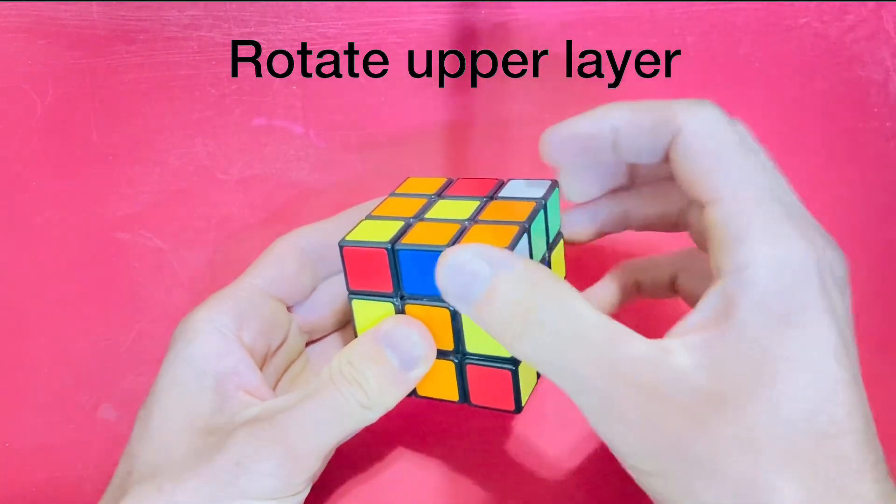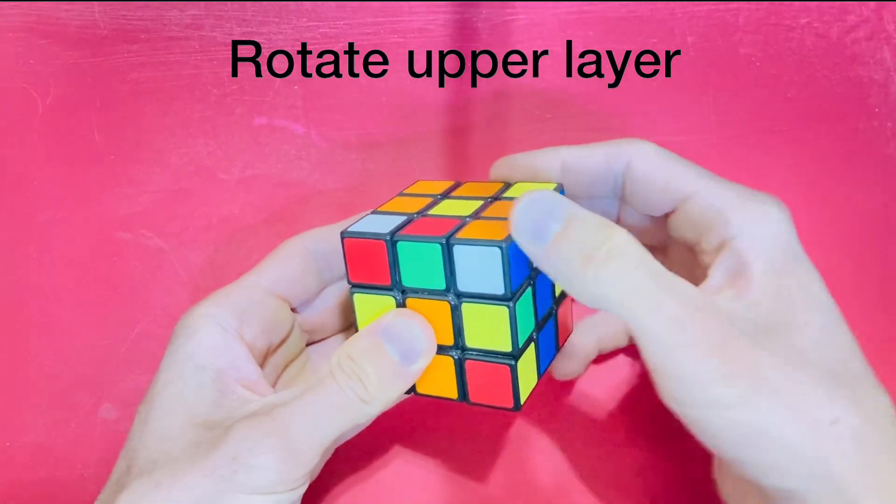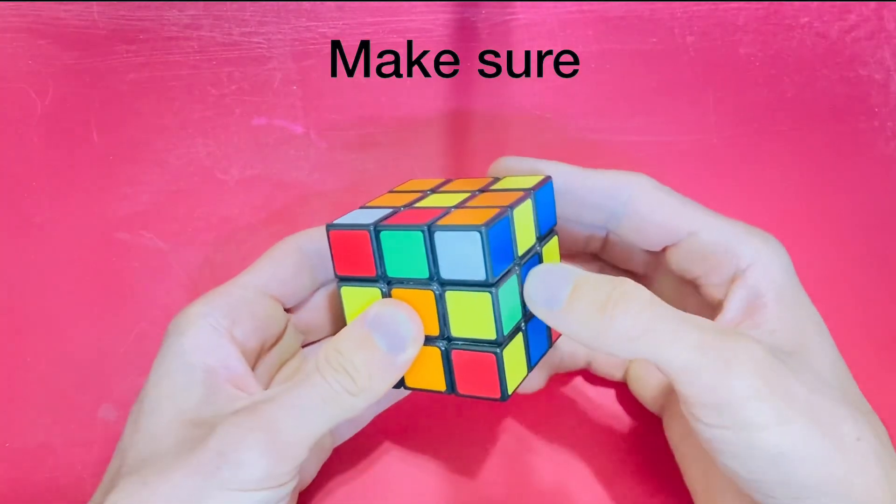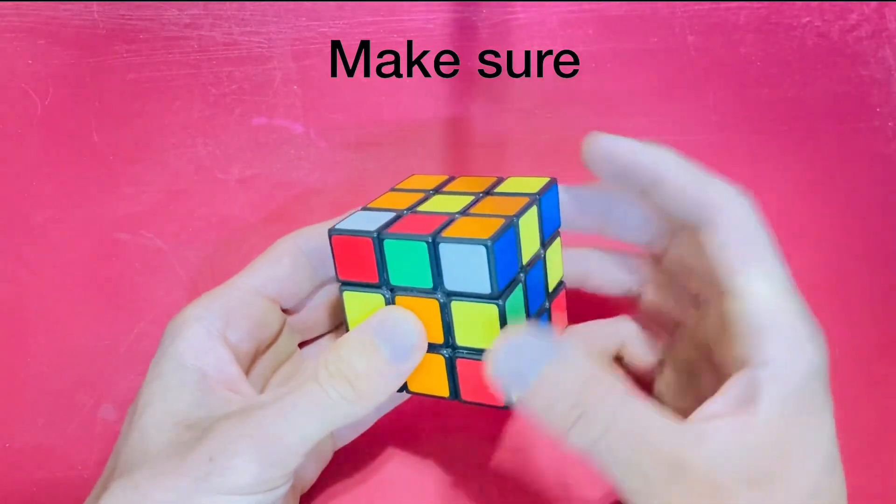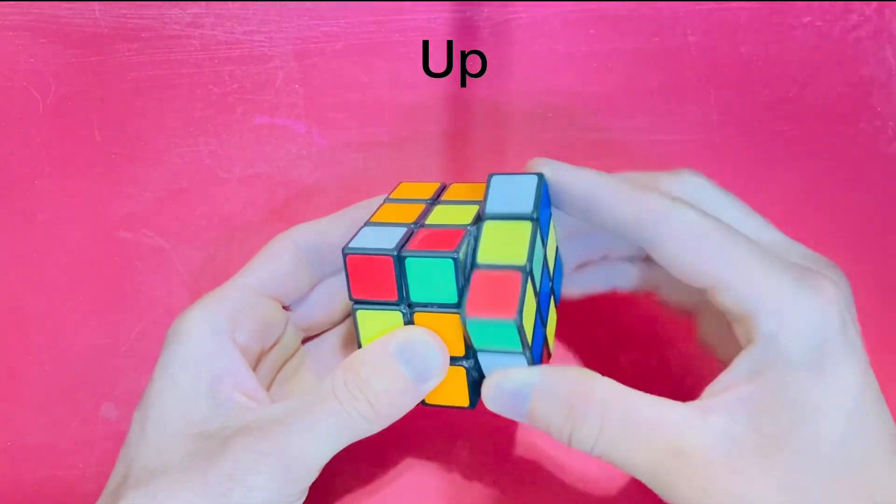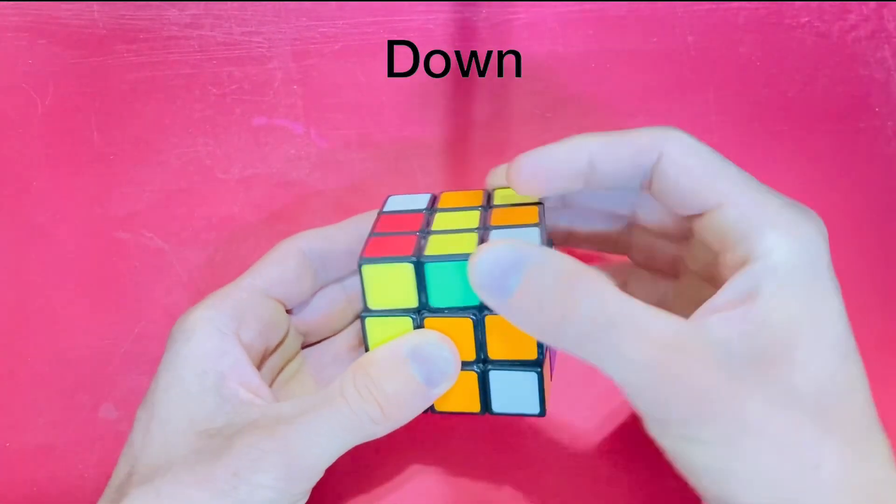Rotate the upper layer until you find the corner that has the same colors as the two centers facing you. Now repeat the sequence: up, left, down, and right.